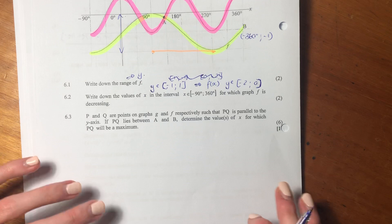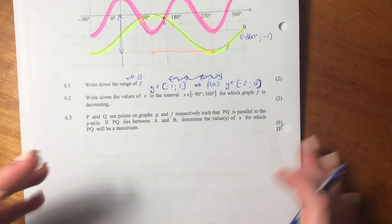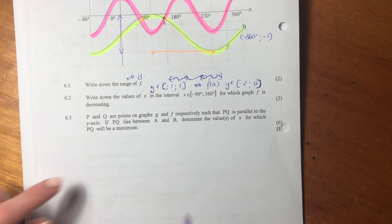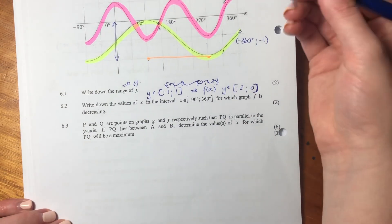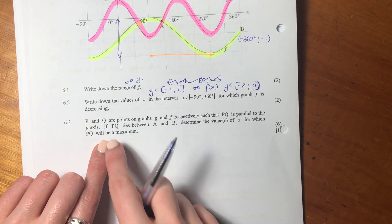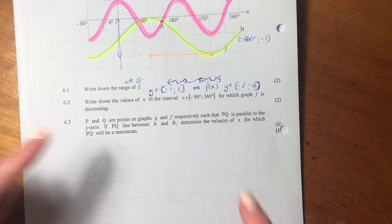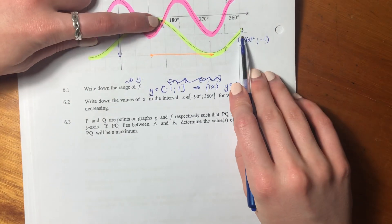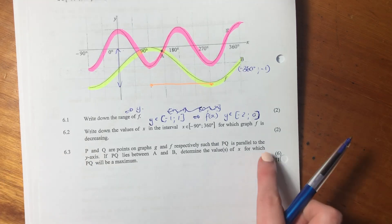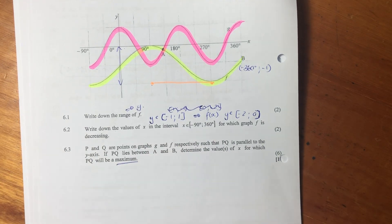Now, let's go to 6.3. 6.3 is the biggest question of this question, so it's going to require a little bit of work, but that's okay. It says, p and q are points on graphs g and f, respectively, such that pq is parallel to the x-axis. So basically, we don't know where. Before I draw it in, let me finish the question. It says, if pq lies between a and b, so it's somewhere between these two points, determine the value of x for which pq is a maximum.